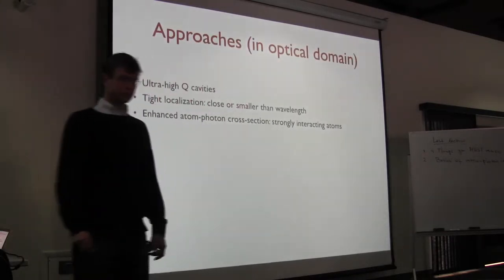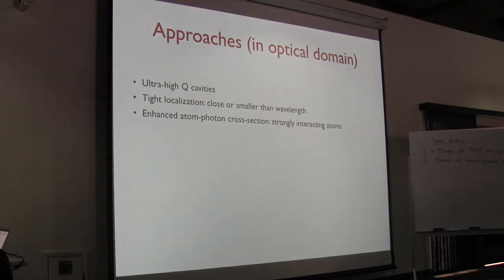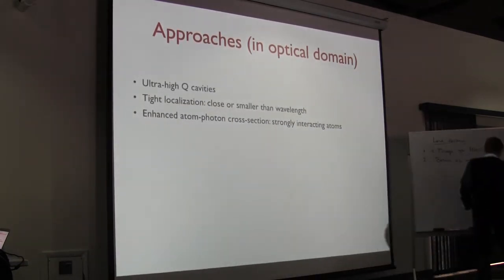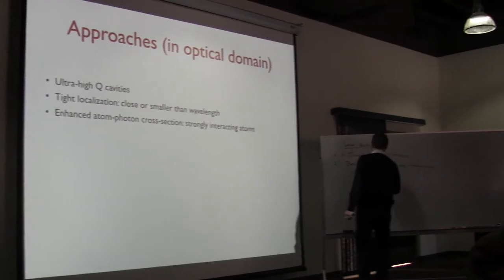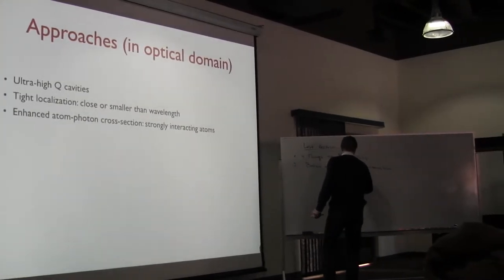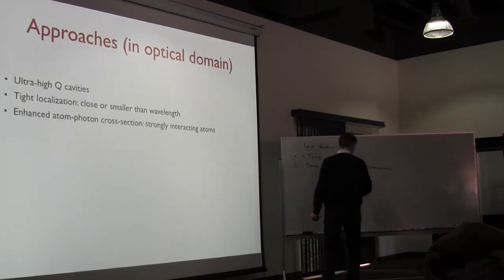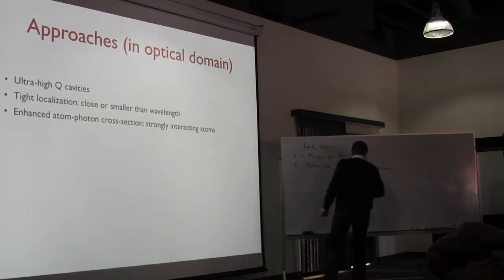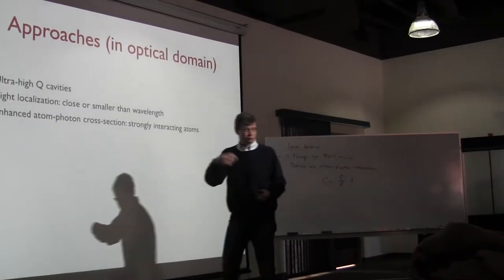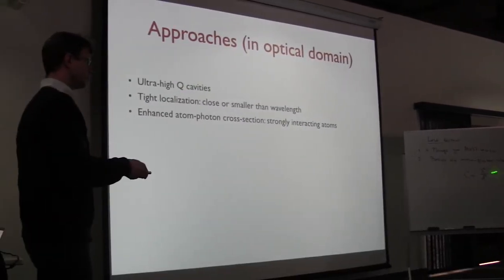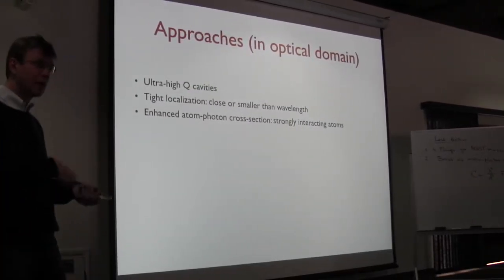So how to implement this experimentally? Broadly speaking, there are three approaches. Cooperativity can be written as lambda-squared absorption cross-section divided by the transverse area of the mode, multiplied by cavity finesse — the number of bounces the photon makes. One approach is to make a very high-quality cavity, that is, increasing finesse, making the photon bounce around many, many times.